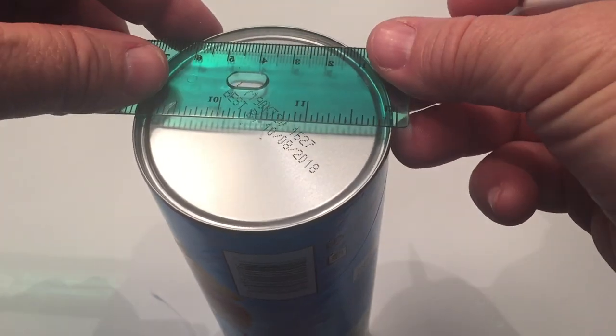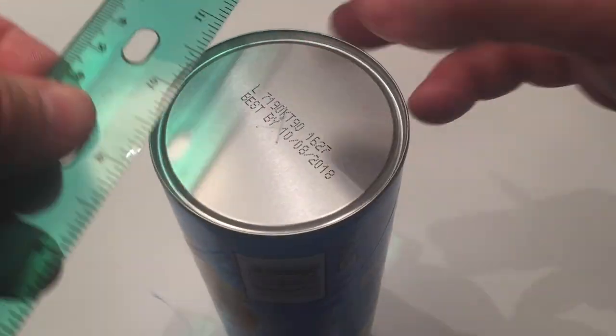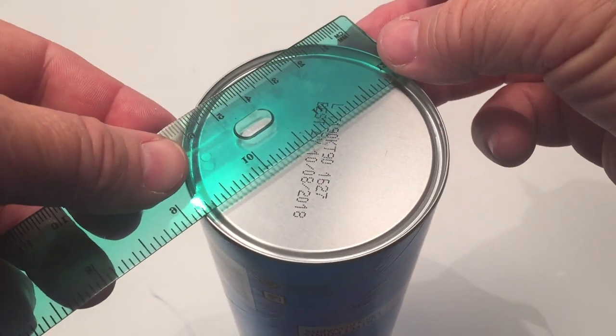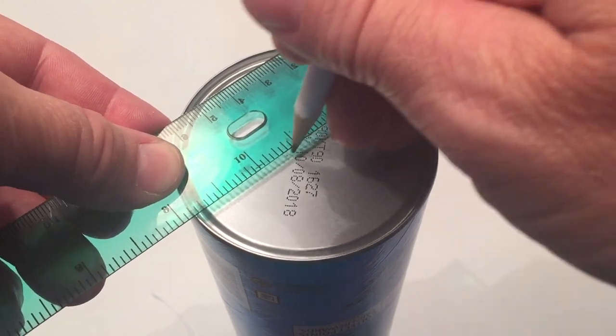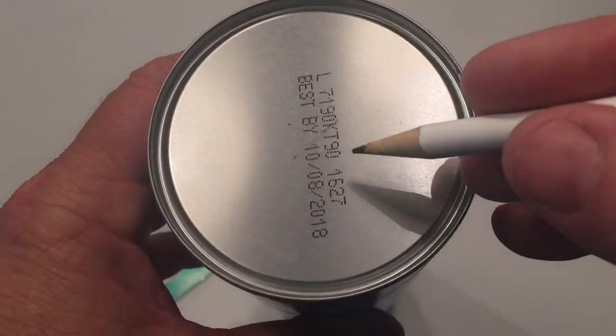Now we're going to flip the can over to the bottom part, which is the aluminum tin. We're going to measure halfway to the middle. So it doesn't have to be exact, but it makes it a lot nicer if it's right in the middle. So kind of just get a good rough draft for the middle there.